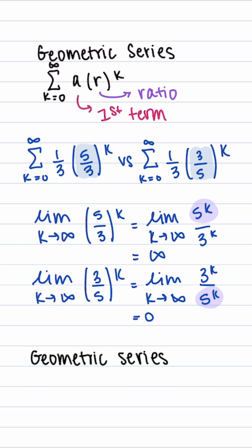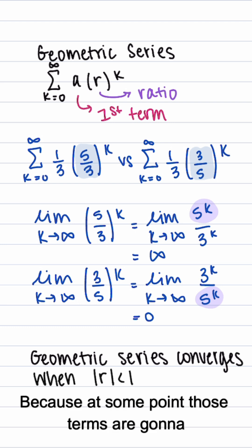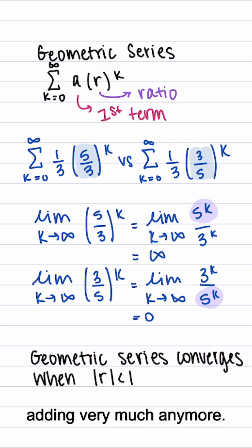This means a geometric series will converge when the absolute value of the ratio is less than 1. Because at some point those terms are going to get very, very small and they're not adding very much anymore.